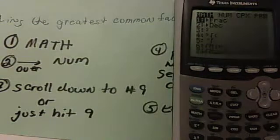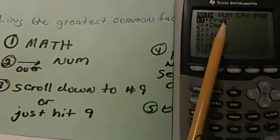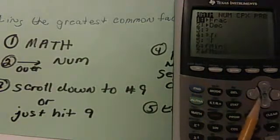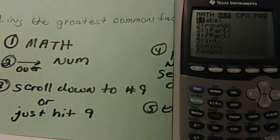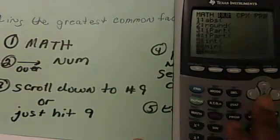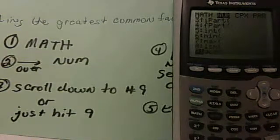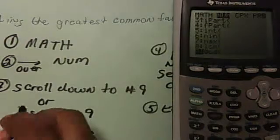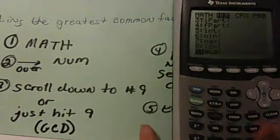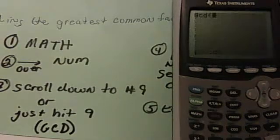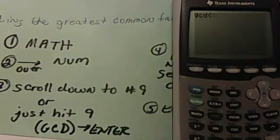Then you're going to go over to NUM. You have to get over there by hitting the right arrow over to NUM. Then, as it says, you can scroll down to the number 9, and it actually says GCD, but it's the same thing as GCF. You're going to hit enter to select.